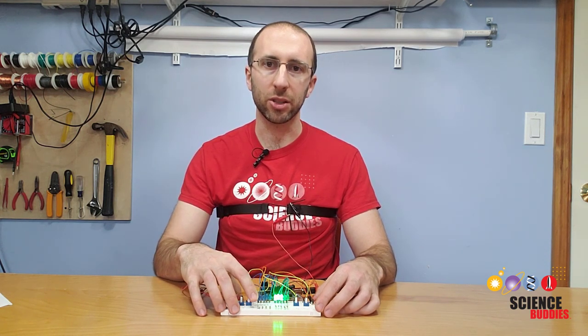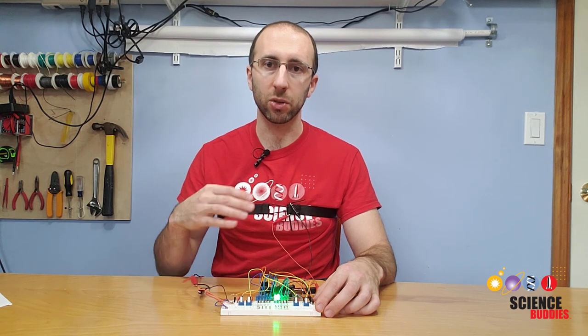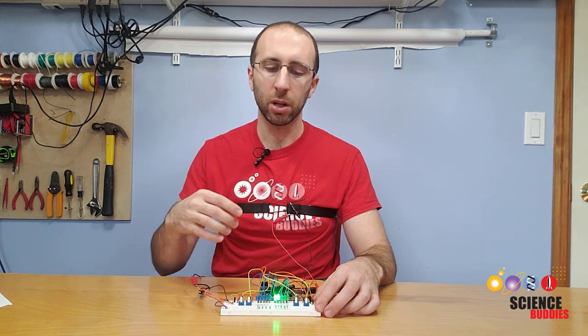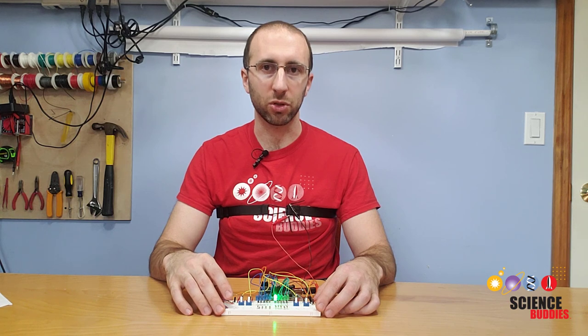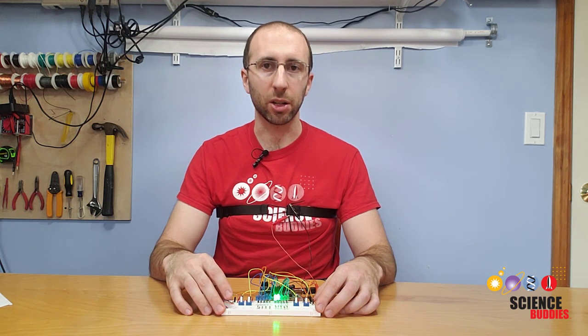The Arduino then lights up two different sets of LEDs, one for the chest and one for the stomach, proportionally to the amount of stretch. Let's zoom in and take a closer look at the circuit.